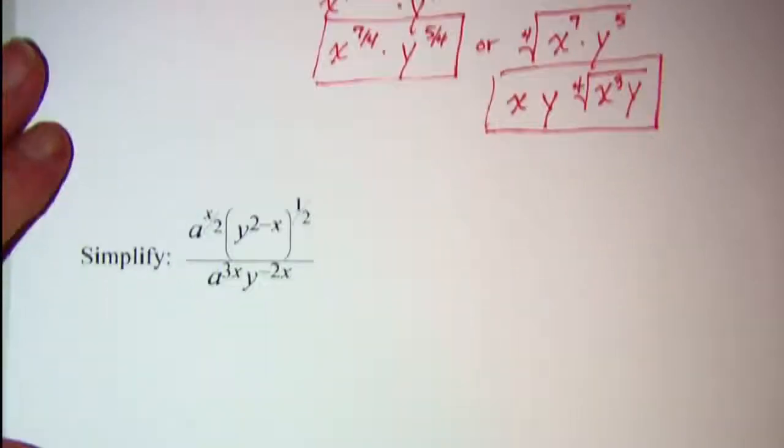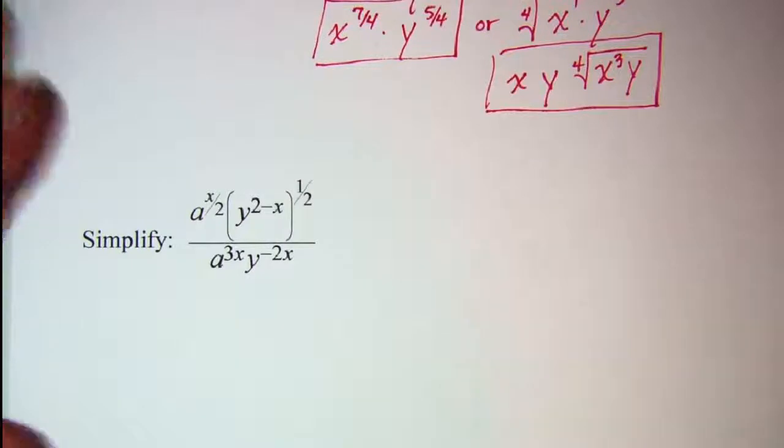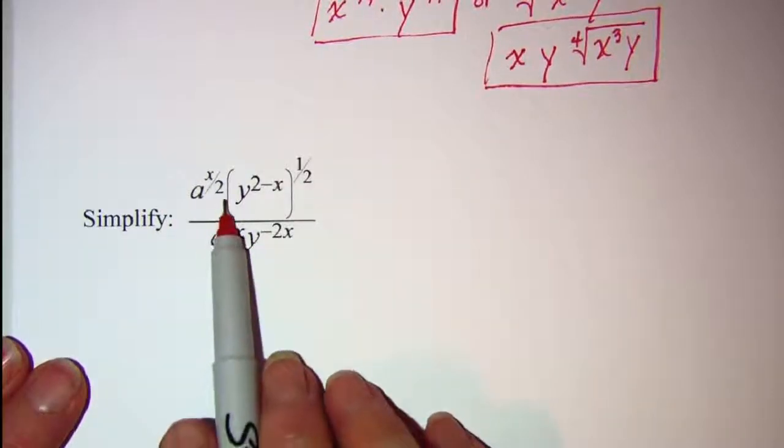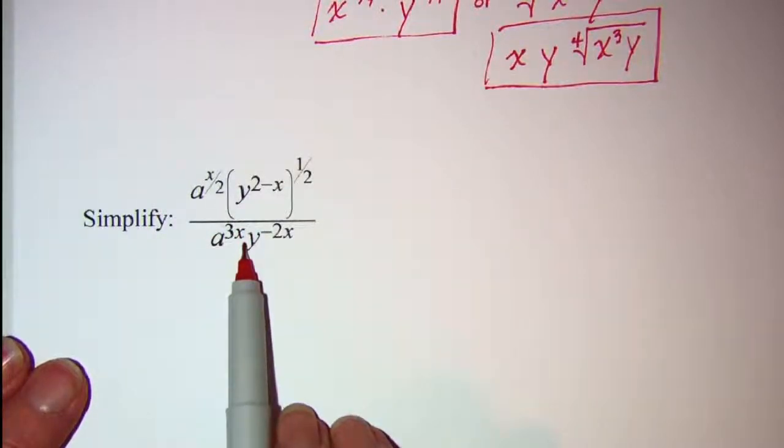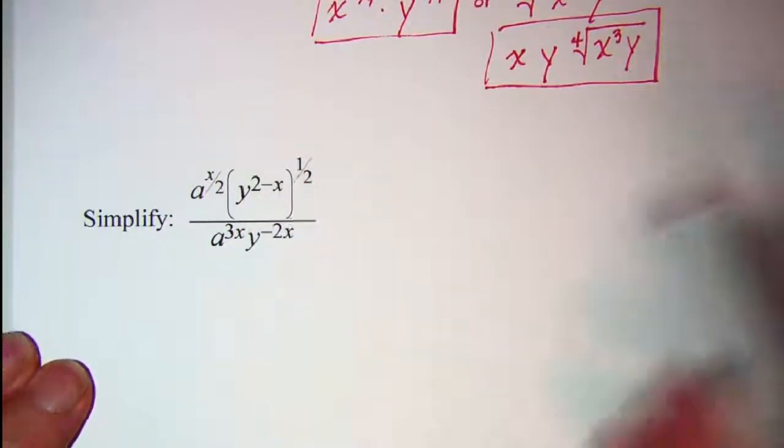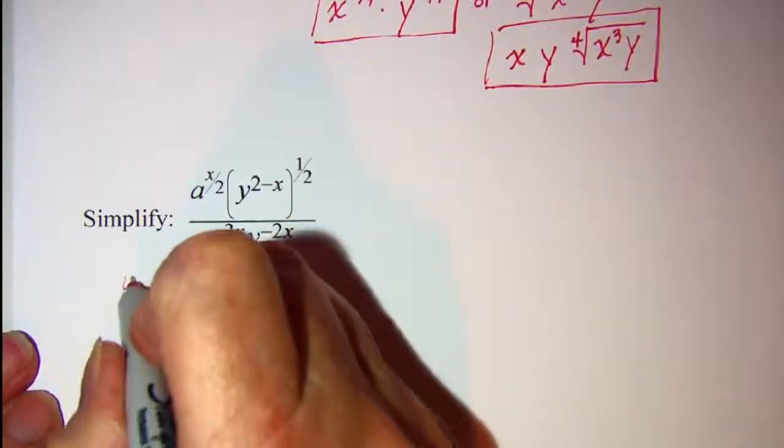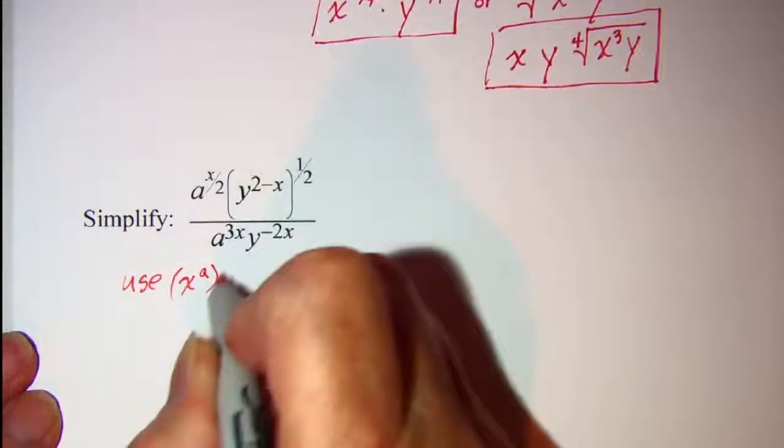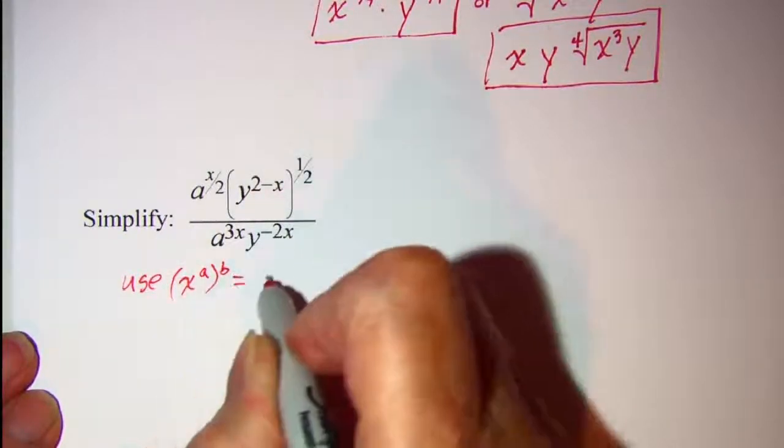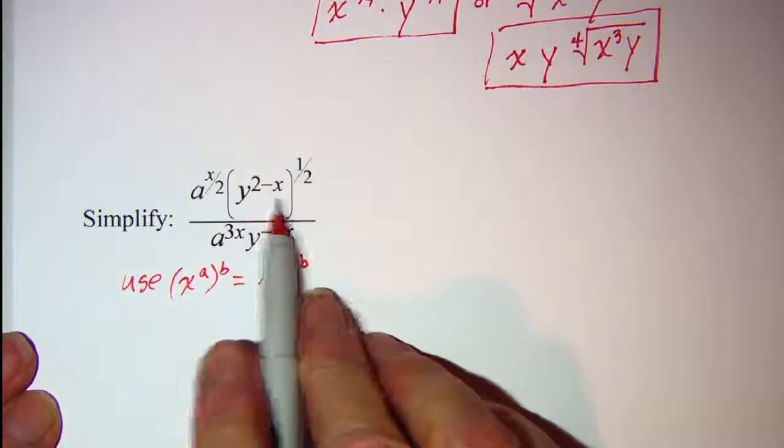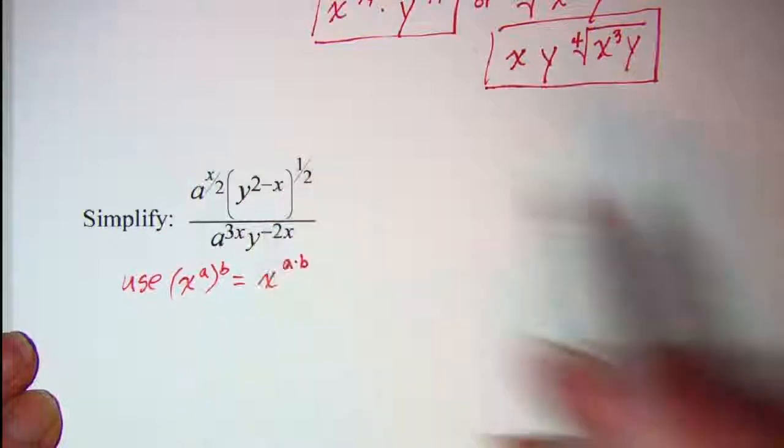Let's do another problem. Some things that I notice: again I have multiplication of the factors. First thing though that I notice is that I have a power to a power. So I'm going to use the rule that says x to the a raised to the b is equal to x to the a times b. I'll use that rule to simplify this factor first.